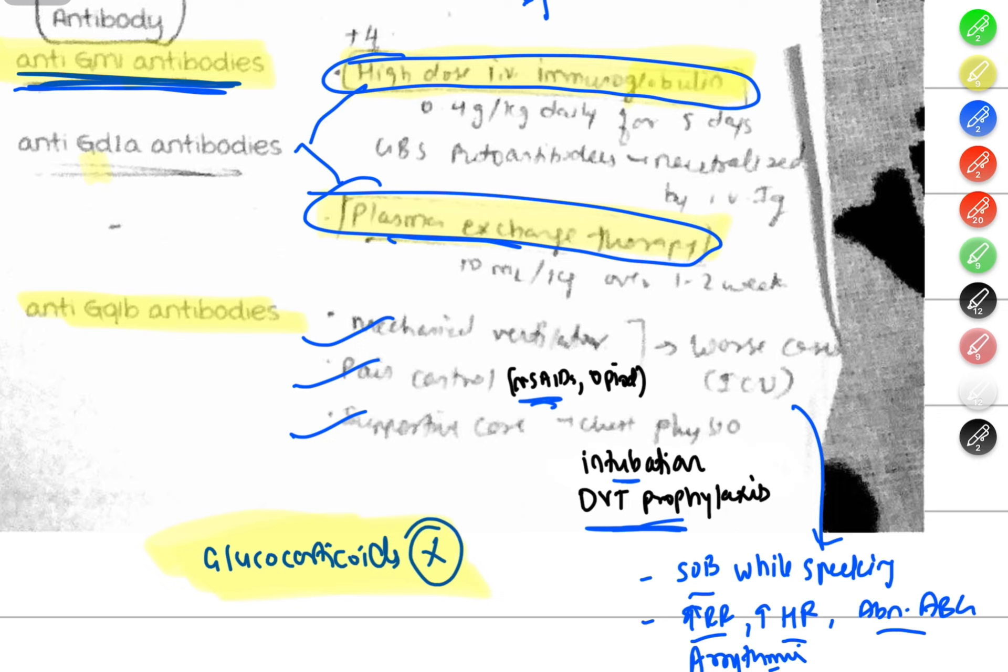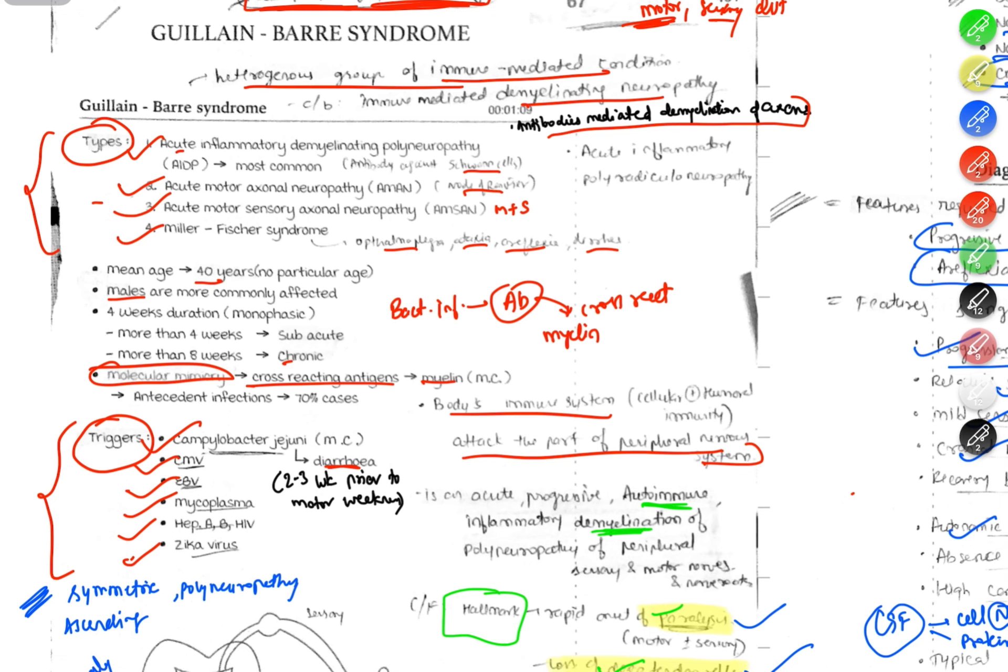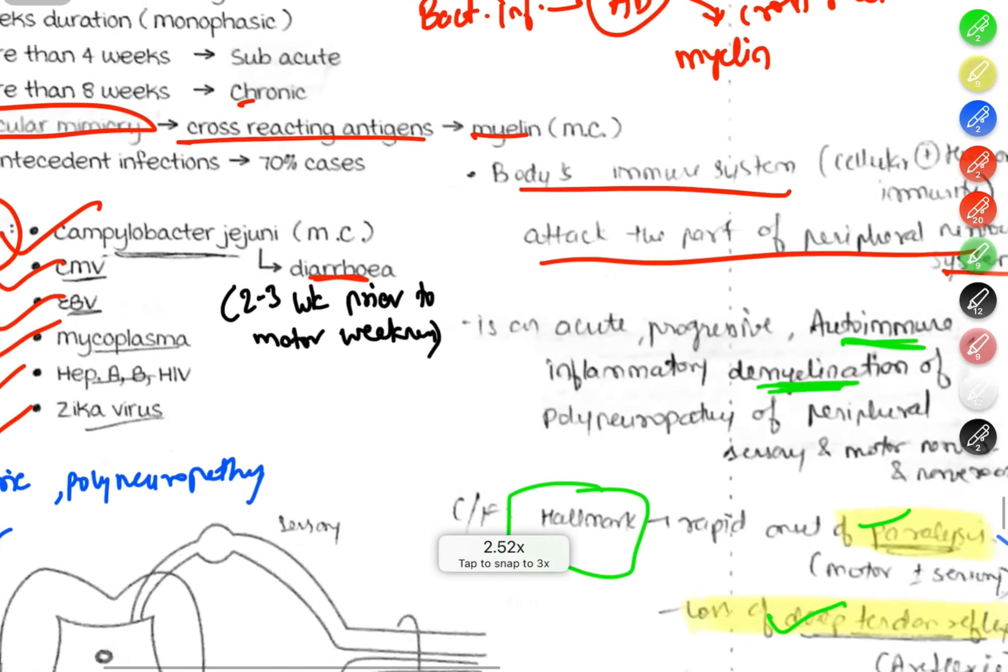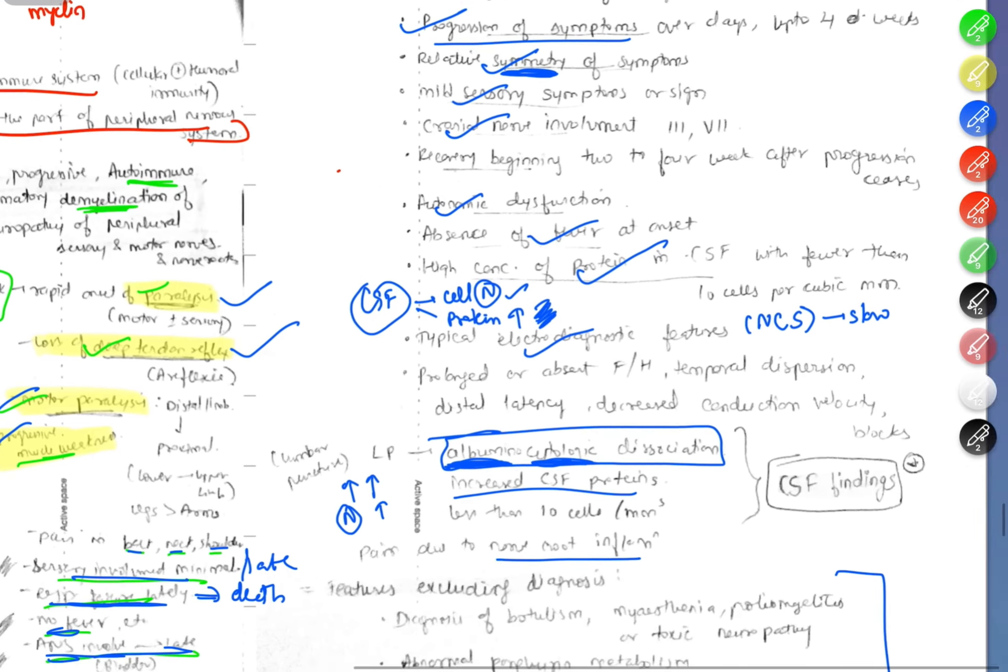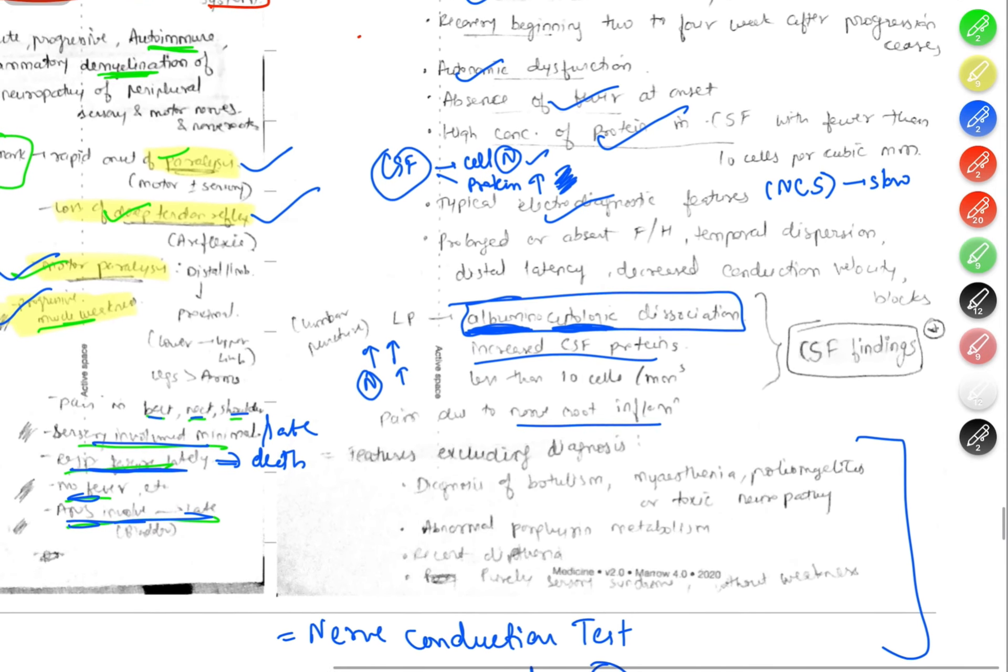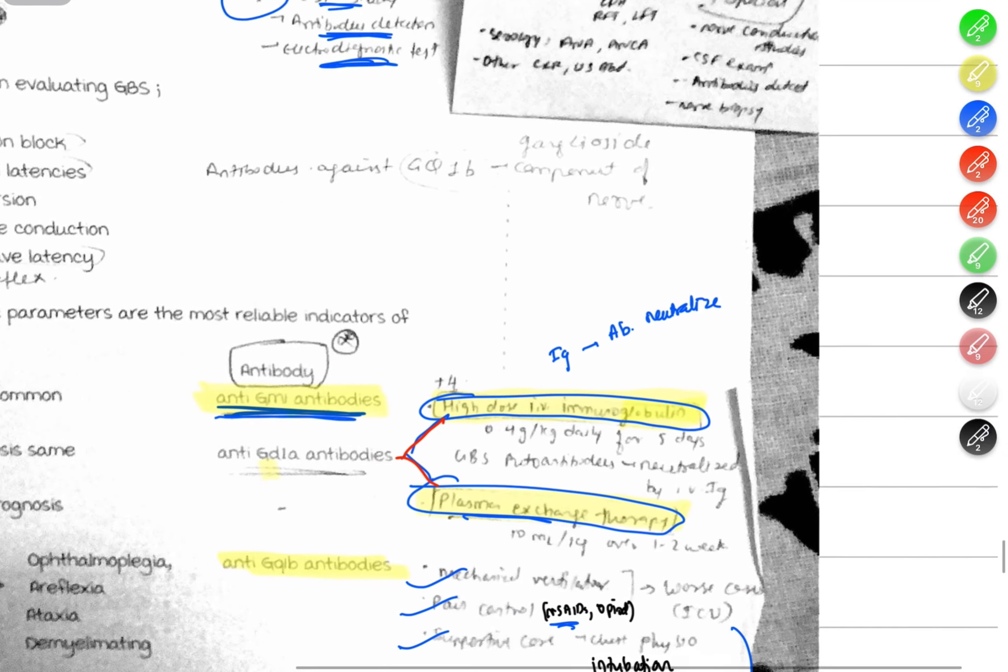Treatment includes two parts: first the main treatment, second supportive care with ICU management, pain control, chest physiotherapy, intubation, and DVT prophylaxis. In summary, GBS includes definition, triggers, main clinical features of progressive weakness and areflexia, lab investigations with nerve conduction tests, antibody diagnosis, and treatment.